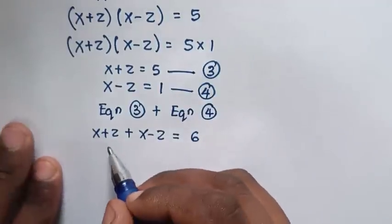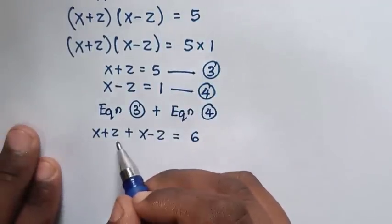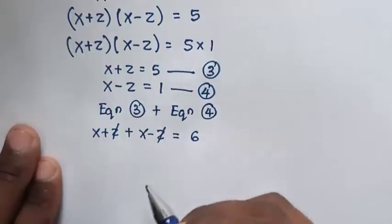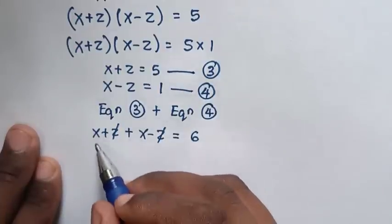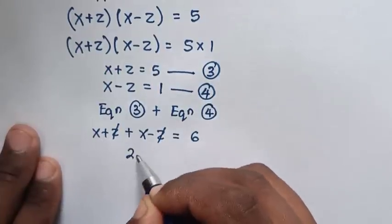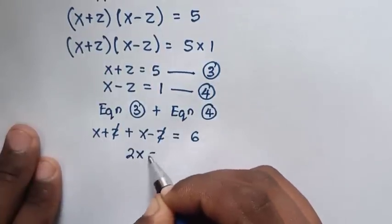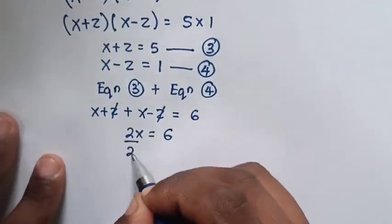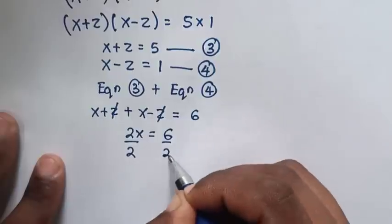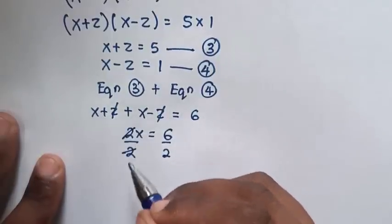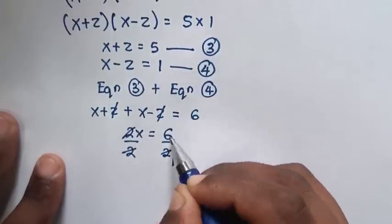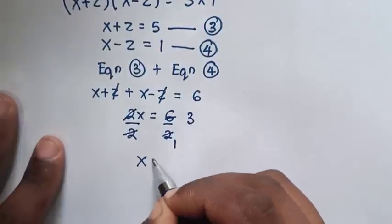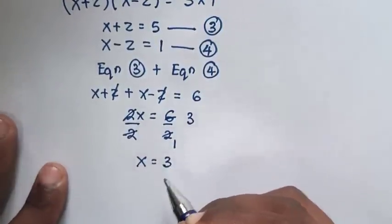Then, because the z terms are positive and negative they cancel, giving 2x is equal to 6. To simplify, divide both sides by 2. This gives x is equal to 3.